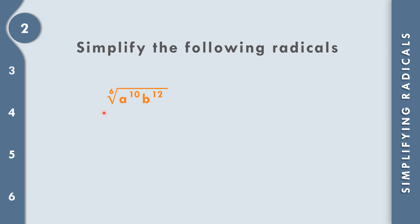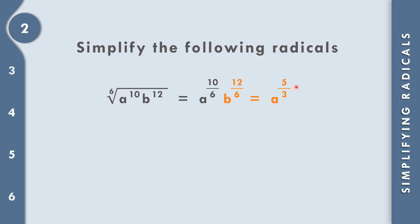For number 2, we have the 6th root of a to the 10th power times b to the 12th power. We copy the base a and write 10 over 6. The lowest term of 10 over 6 is 5 over 3, because 10 divided by 2 is 5, and 6 divided by 2 is 3. For b, we write 12 over 6, and 12 divided by 6 equals 2, so b squared.